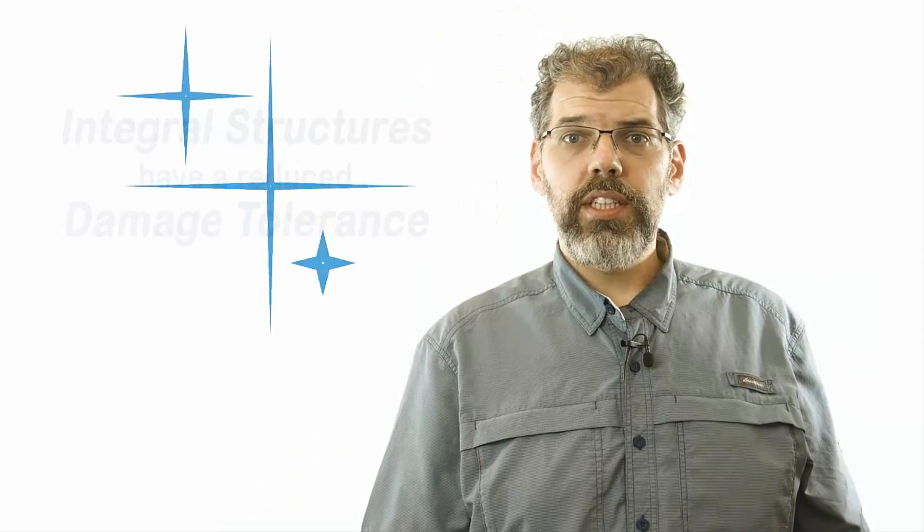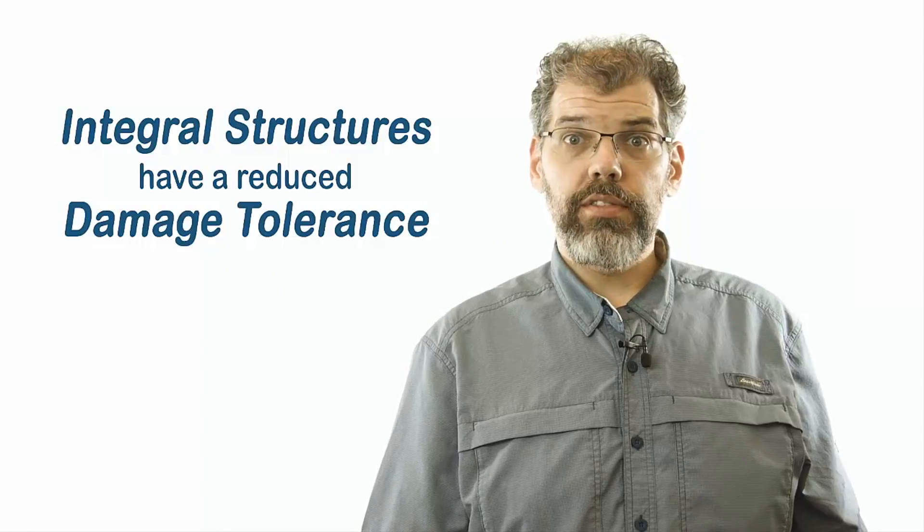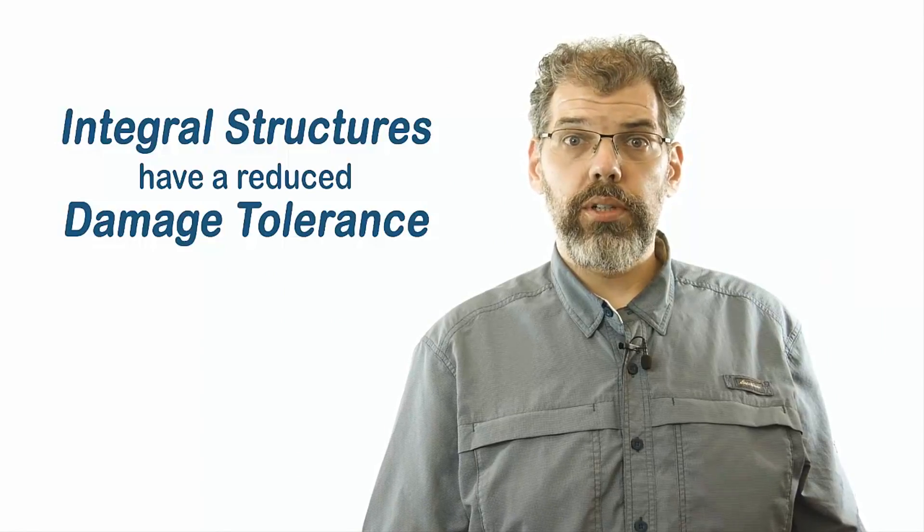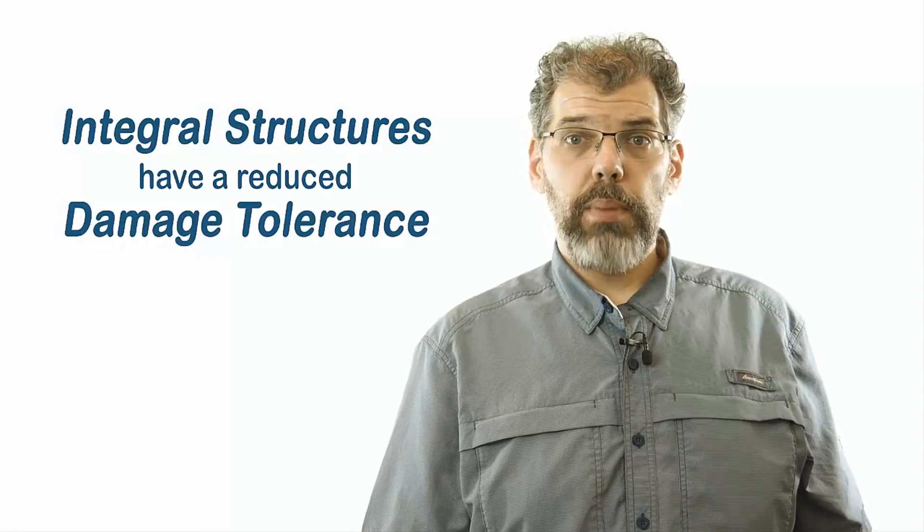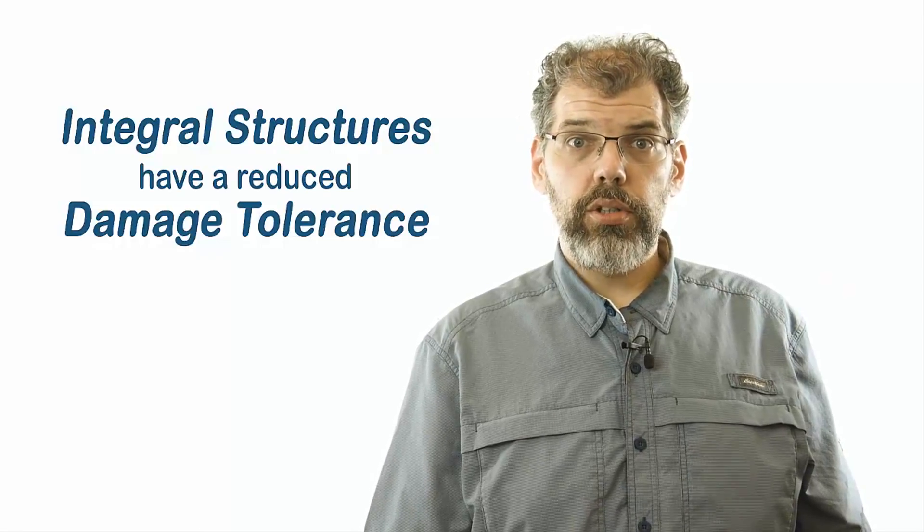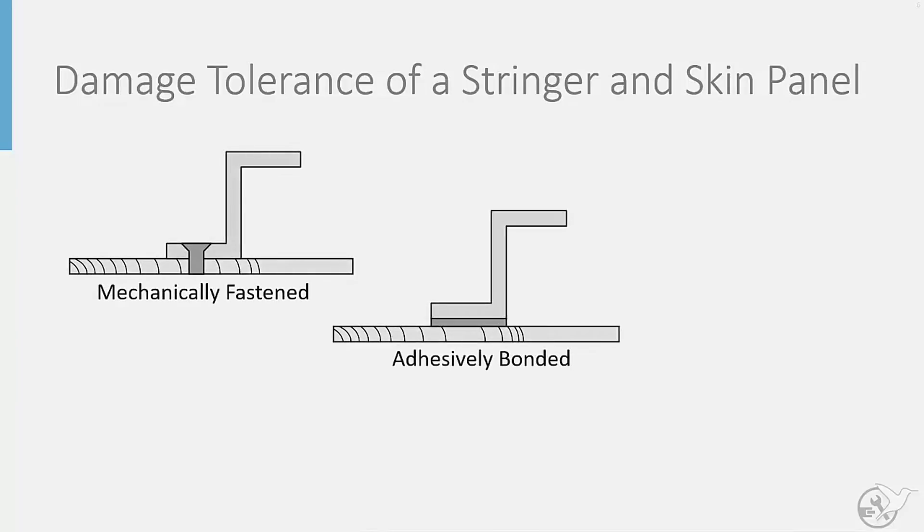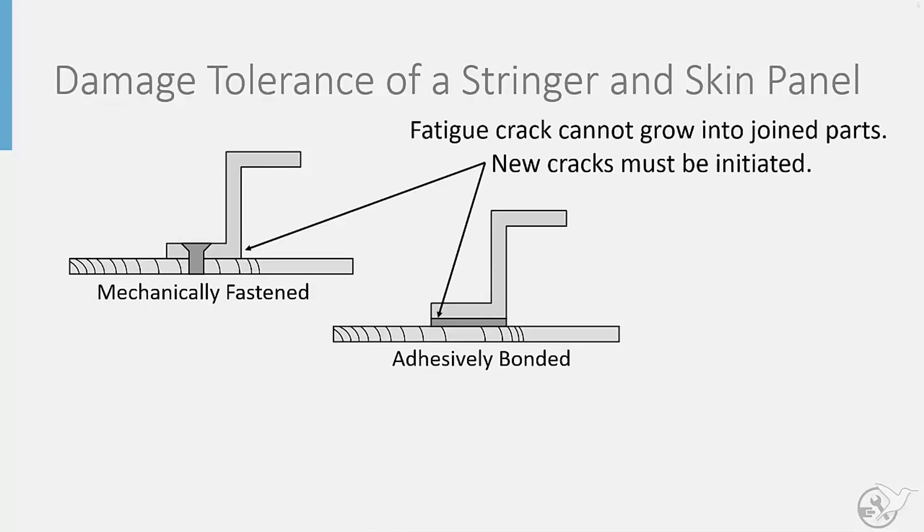However, one disadvantage to be aware of is the fact that it reduces the damage tolerance of the structure. We can illustrate this by visualizing the joining of a stringer to a skin panel. If we look at the mechanical fastening and even adhesive bonding, we can see that the stiffener and skin remain as distinct and separate parts. Any fatigue cracks that initiate in one part will be confined to grow in that part.